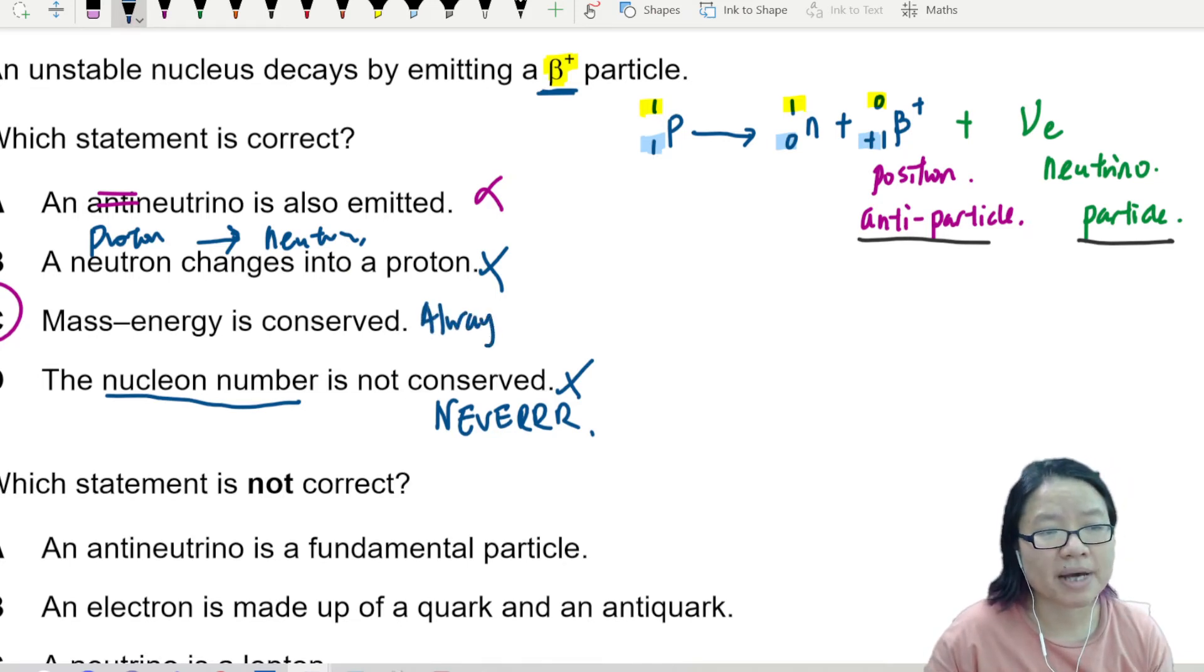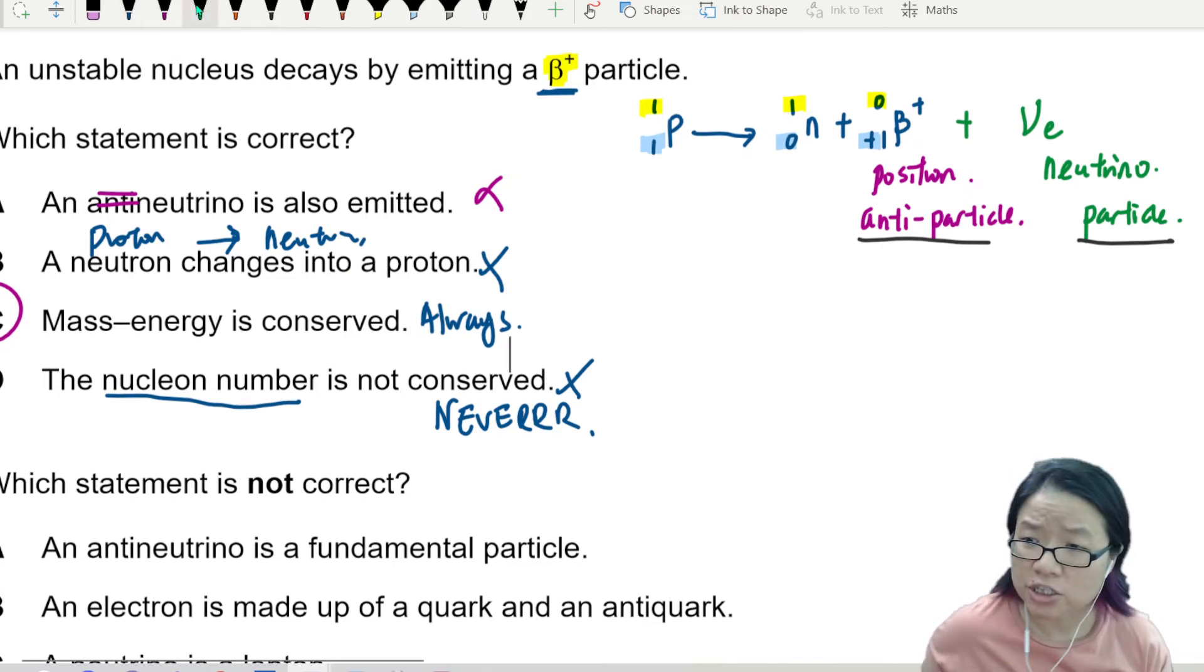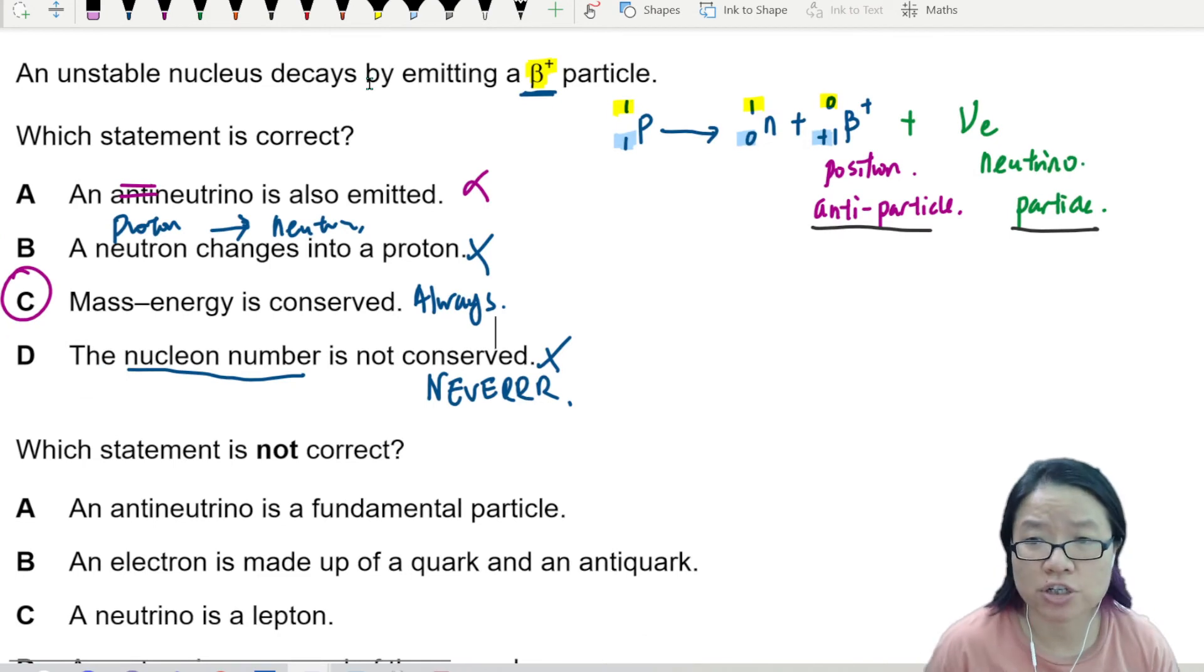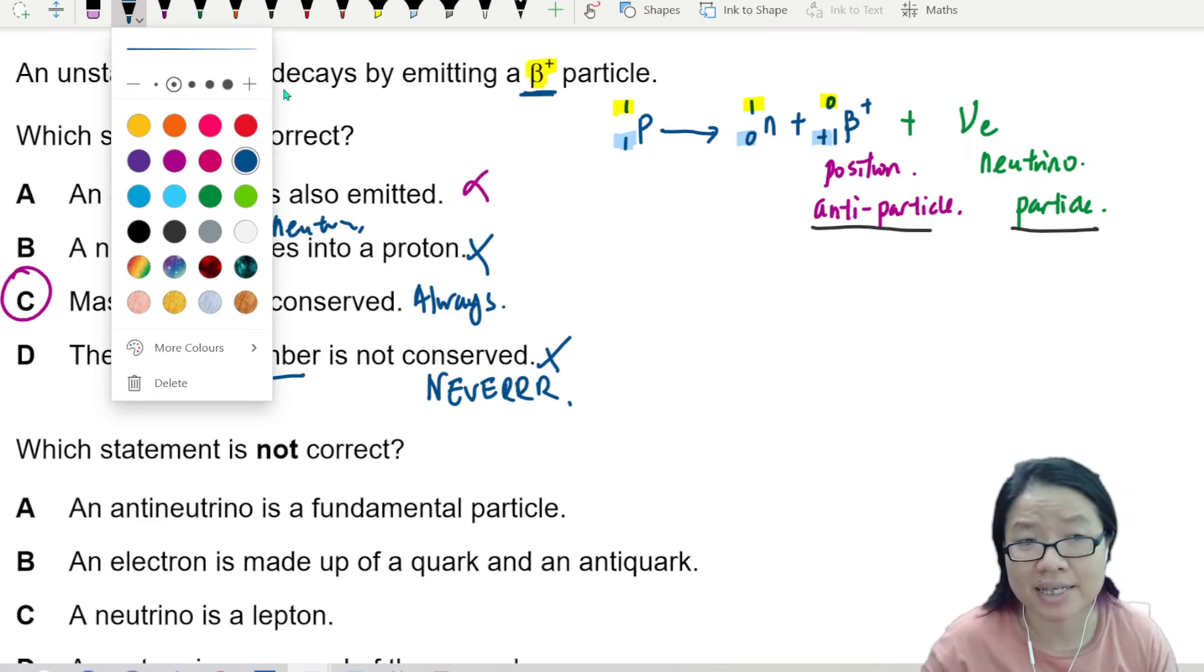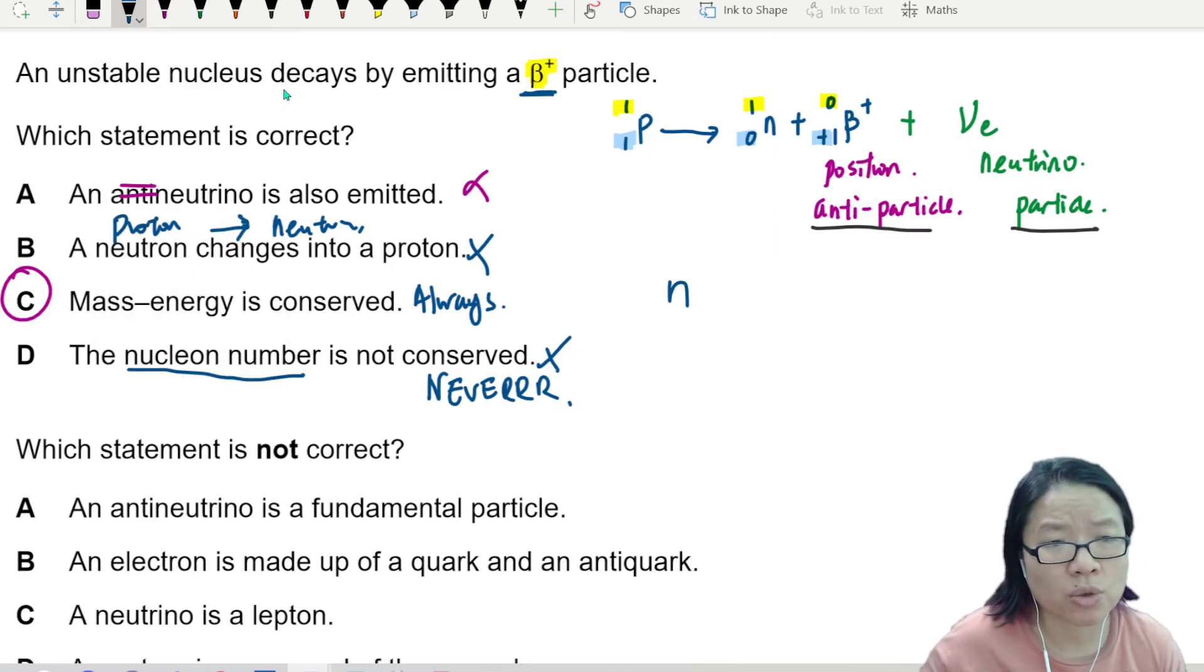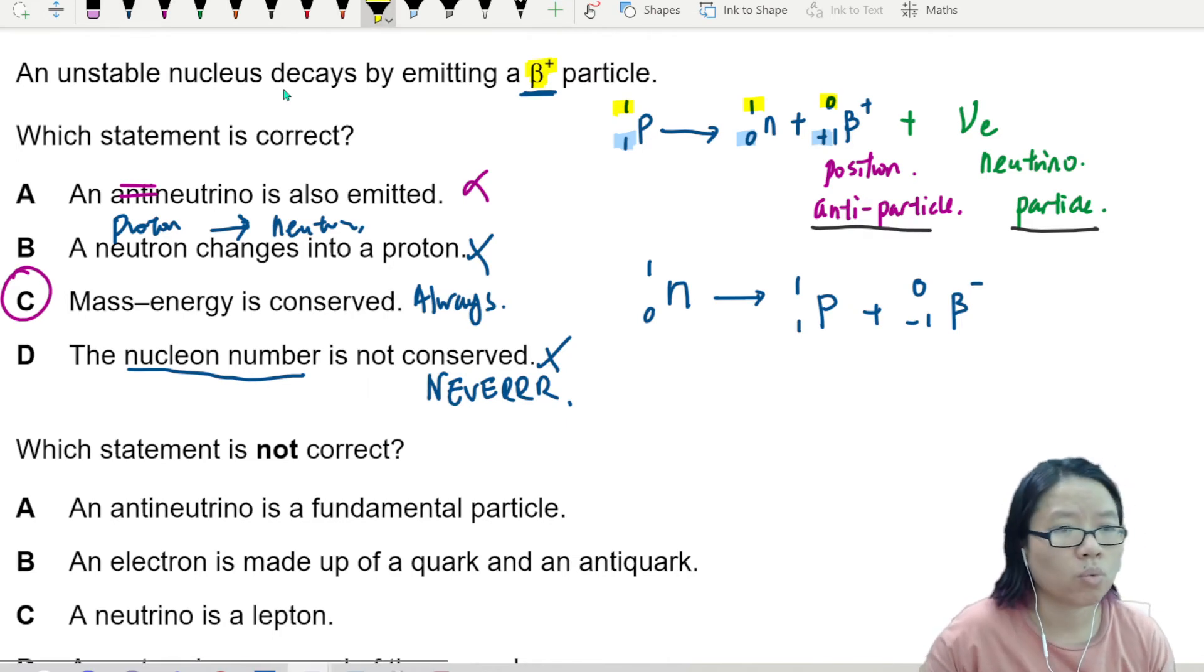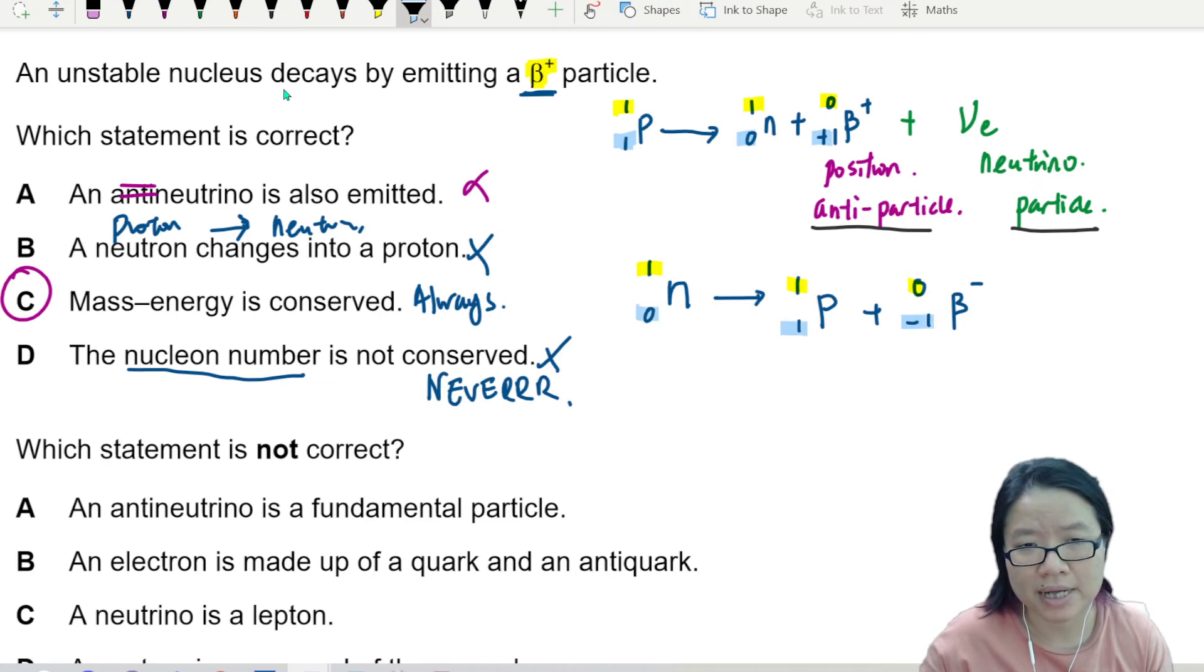Always. If mass-energy is not conserved, Einstein is wrong. If Einstein is wrong, a lot of things in the universe we gotta change. So the other reaction you should know is the beta minus particle, or the beta decay, or the regular beta decay. That one would be a neutron becoming a proton. This is just extra for you. First thing you check: balance or not. 1 is 1 plus 0. 0 is 1 plus negative 1.